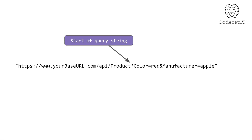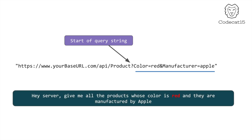Now let's understand what a query string looks like. The query string starts with a question mark, and after this question mark you add your input parameters in the string. The query string I'm showing you commands the server: don't give me all products, give me only those products whose color is red and whose manufacturer is Apple. Now let me switch to Swagger documentation.